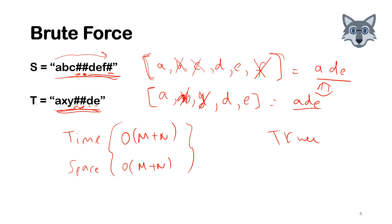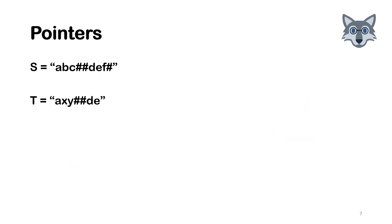This is a pretty straightforward solution. In terms of time you can't do better — you have to go through each character at minimum. In an interview, you'd jump right in, present this O(m + n) time and O(m + n) space solution, then ask if they want a better one. If you have no idea about the optimal solution, you just have to rely on your instincts.